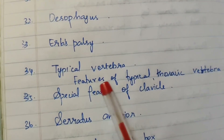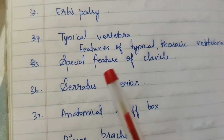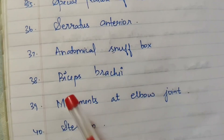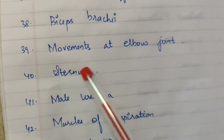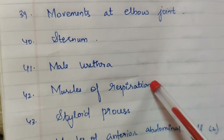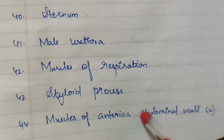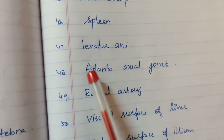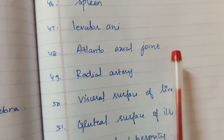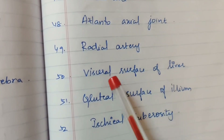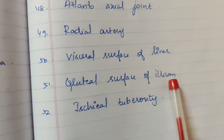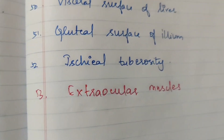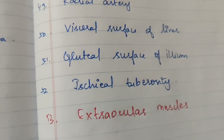Special features of clavicle, serratus anterior, anatomical snuffbox, biceps brachii, movements of elbow, sternum, male urethra, muscles of respiration, muscles of anterior abdominal wall, wrist drop, spleen, levator ani, atlanto-axial joint, radial artery, visceral liver, gluteal region, ileal region, ischial tuberosity, and extraocular muscles. These complete all the questions in this question paper.